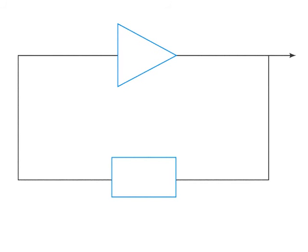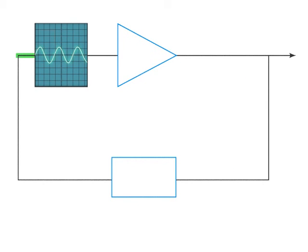The function of an electronic oscillator is to convert direct current to alternating current by continually looping the signal through a feedback circuit. An oscillator is made up of two components.